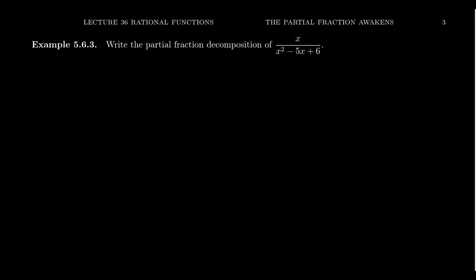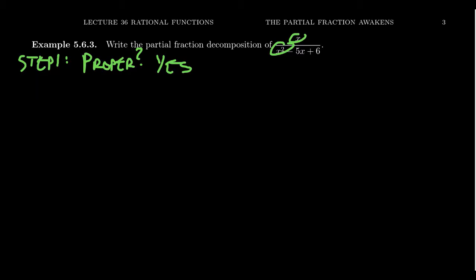In this example, we're going to write a partial fraction decomposition for the rational function x over x squared minus 5x plus 6. The first thing to do is to check: is it a proper fraction? In this case, the answer is yes. The numerator is degree 1, the denominator is degree 2, so this is a proper fraction. If it was improper, we'd have to do long division, so we go to the next step.